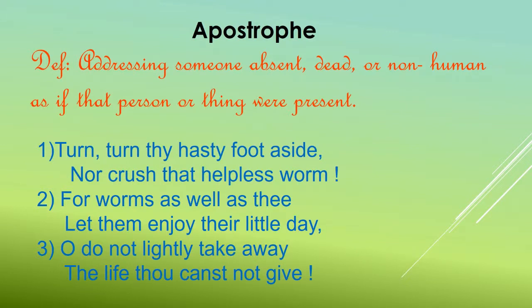The second figure of speech is apostrophe — addressing someone absent, dead, or non-human as if that person or thing were present. For example, 'Turn, turn thy hasty foot aside, nor crush that helpless worm' — the poet is addressing the reader who is not present at that moment. Another example is 'for worms as well as thee, let them enjoy their little day.' Also, 'Oh, do not lightly take away the life thou canst not give' is an apostrophe addressing the reader directly.